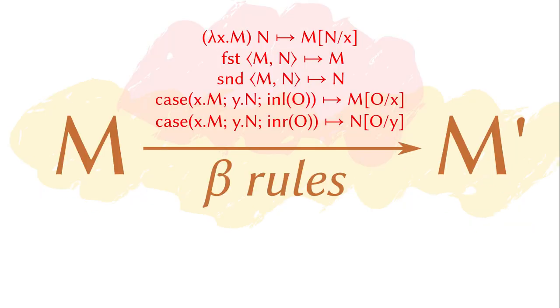So, the first approximation is to run the terms using these computation rules, also known as beta rules, until we are stuck. Note that the judgmental equality is a congruence, and thus we shall recursively run terms under the binders.